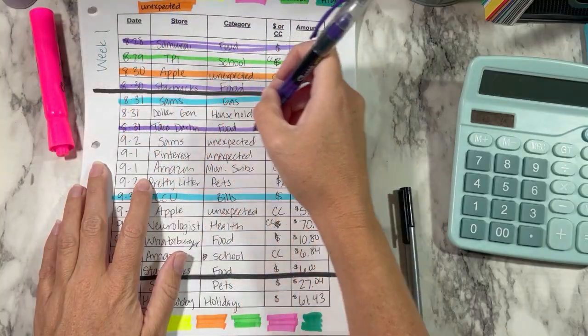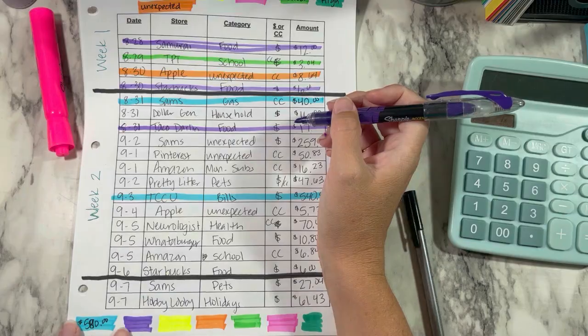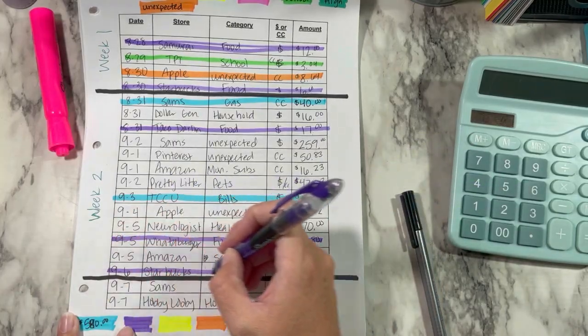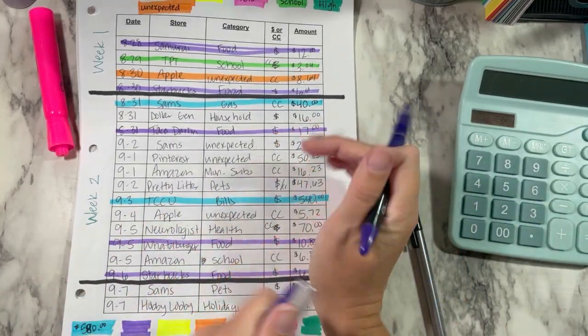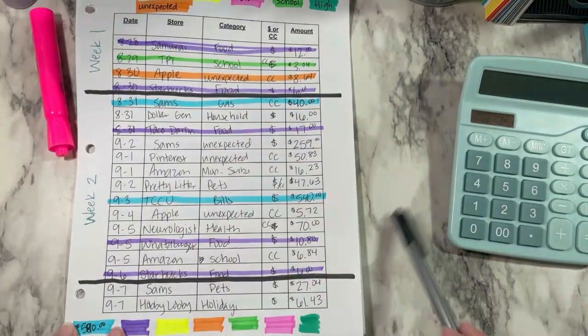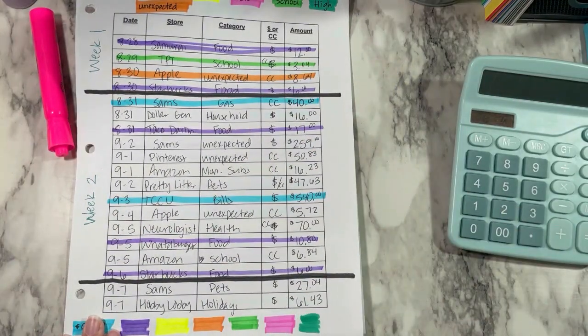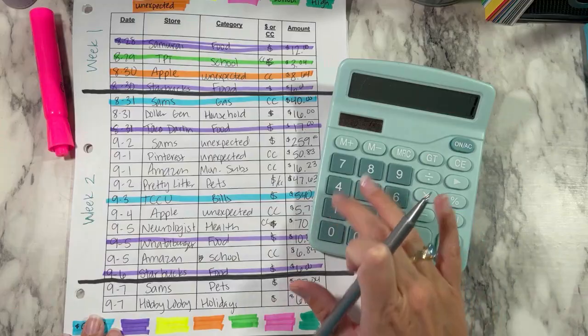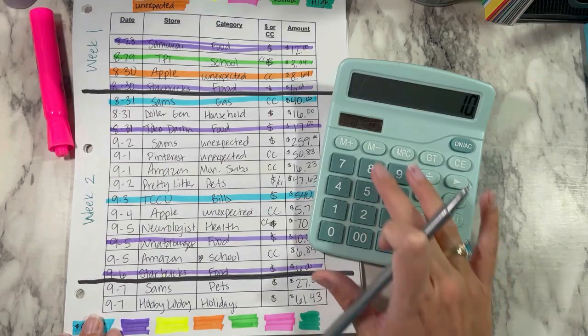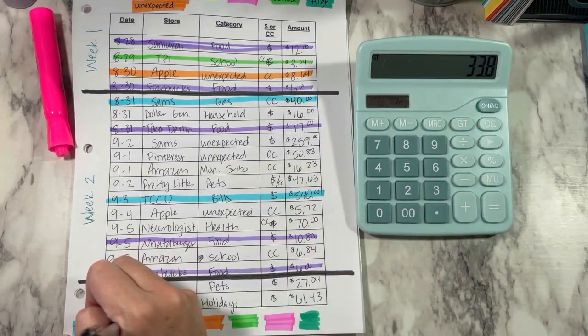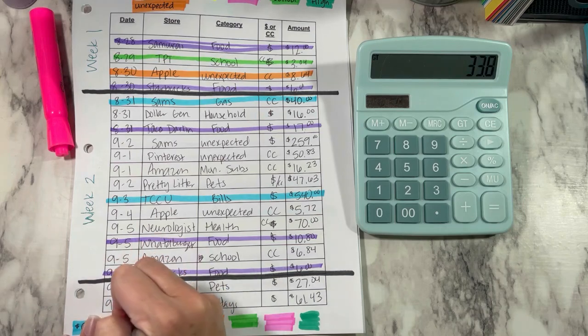We've got this one here, we have this one, and this one. I did pretty good with not eating out. I didn't buy groceries this week. That helped a lot as well. So for food, we've got, let's see, $17 plus $10.80 plus $6. And that is $33.80.